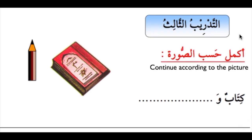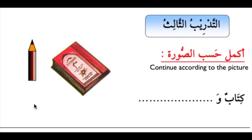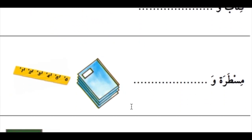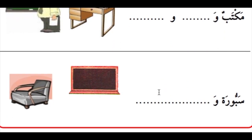The third exercise — التدريب الثالث. This one I will also leave you to do on your own. It's to continue according to the picture. You don't have the word here — you have it in the beginning — but once you learn the eight words you can guess which one it is and maybe write it here.